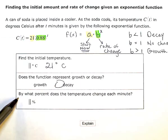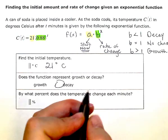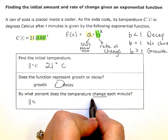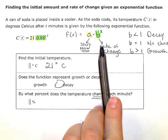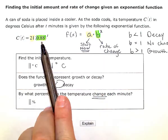Lastly, it says by what percent does the temperature change each minute? So we're talking about the change here. So again, we're going to look at this number, the green one, the rate of change.